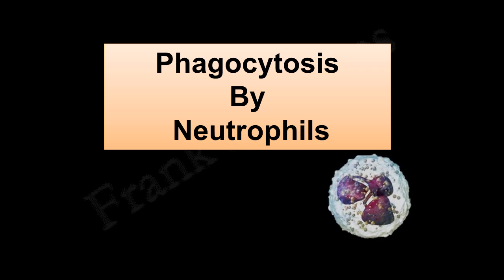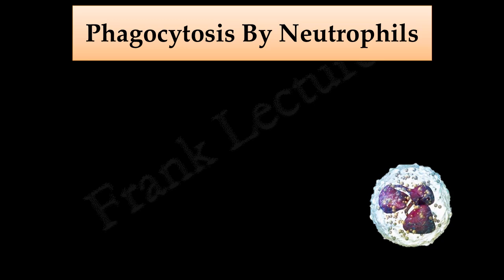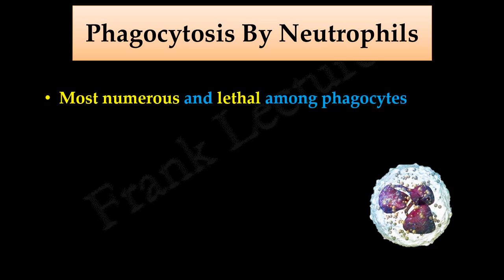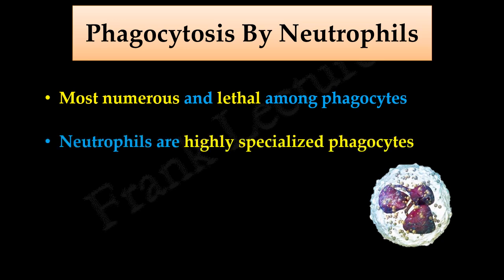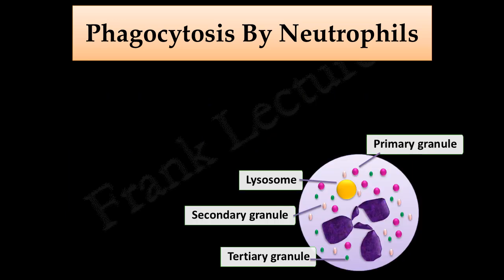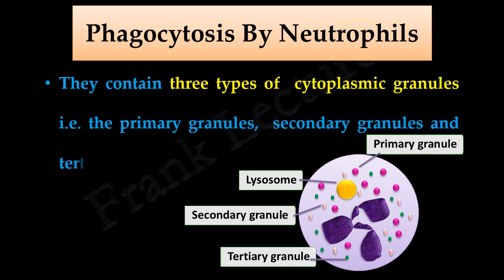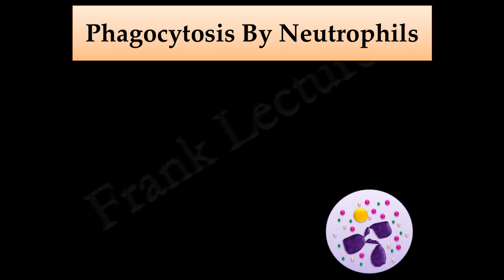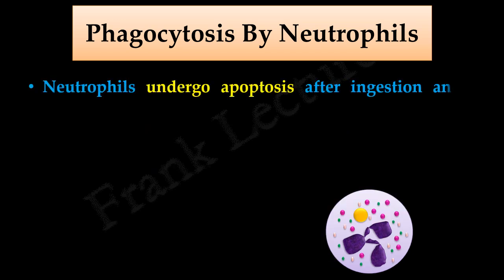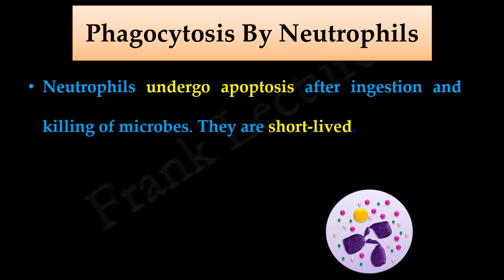Phagocytosis by neutrophils is different. Neutrophils are the most numerous phagocytes and also the most lethal — they are highly specialized. This is because they contain three types of cytoplasmic granules: primary granules, secondary granules, and tertiary granules. These granules contain diverse types of microbicidal substances and contribute to phagocytosis. One important feature of neutrophils is that once microbial killing is complete, they undergo apoptosis — they are short-lived — and these dead neutrophils are phagocytized by the macrophages.